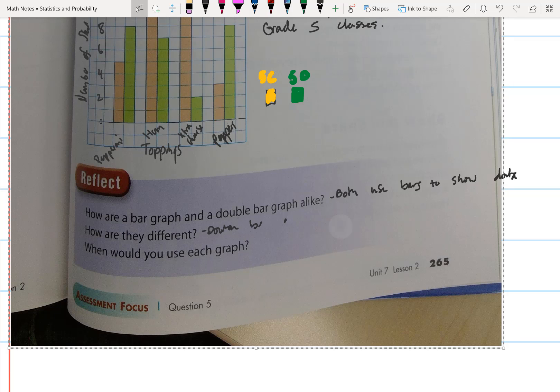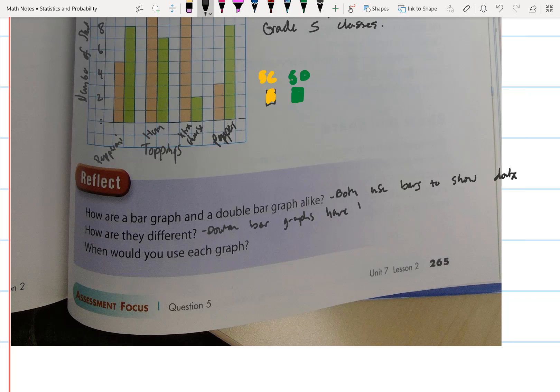How are they different? Double bar graphs have two bars, and they have a legend, and they show two sets of data at the same time.